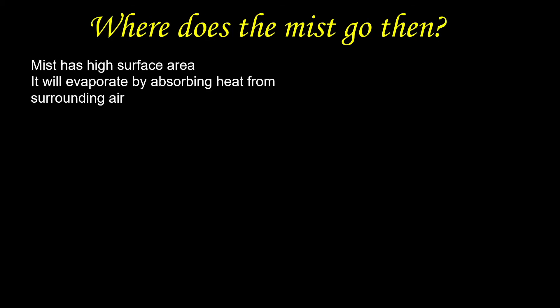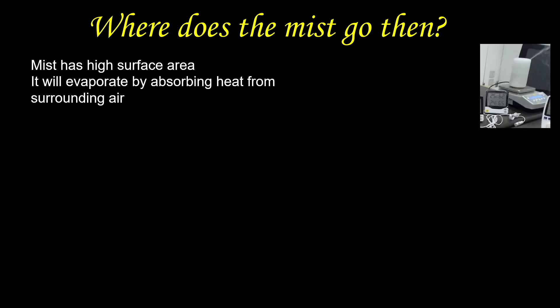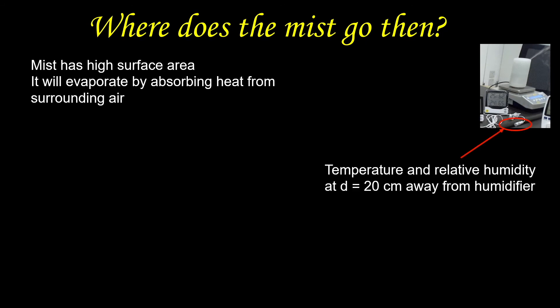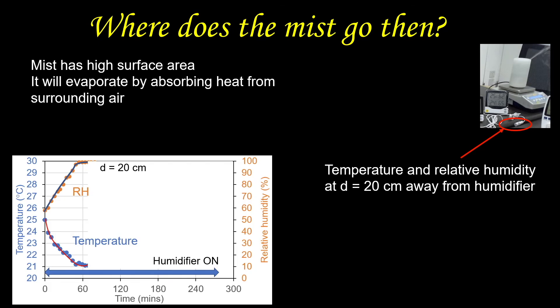So where does the mist go then? The mist vanishes after it comes out. The mist has a very high surface area, so it will evaporate by absorbing heat from the surrounding air. We can see its effect by putting a sensor that measures temperature and relative humidity about 20cm away from the humidifier. We see that as time goes on, the relative humidity increases because the water becomes water vapor, and the temperature drops because the evaporation takes away heat from the air.